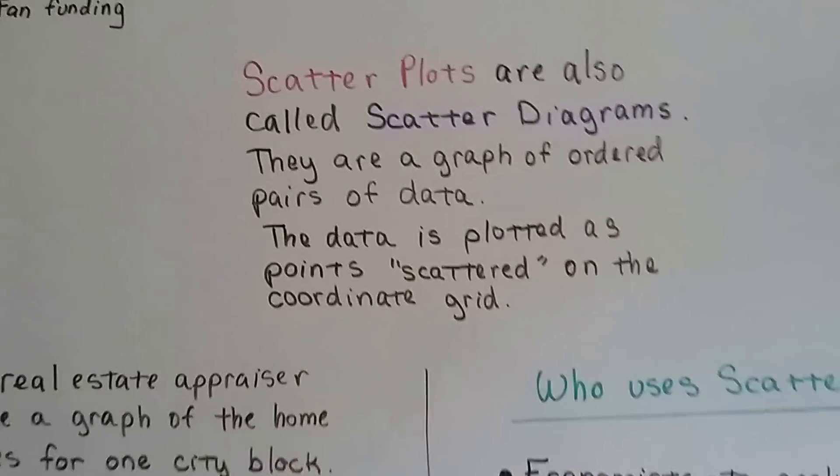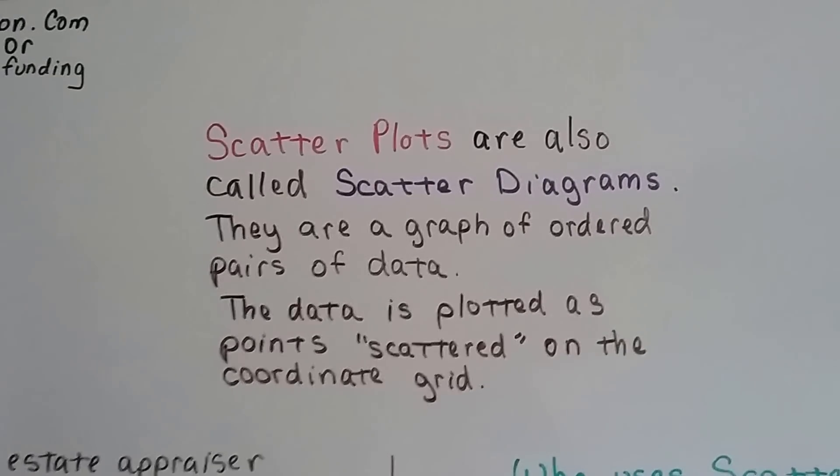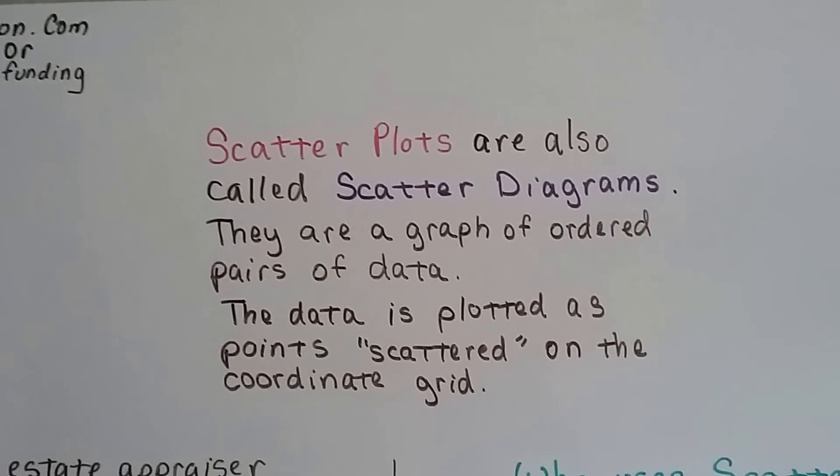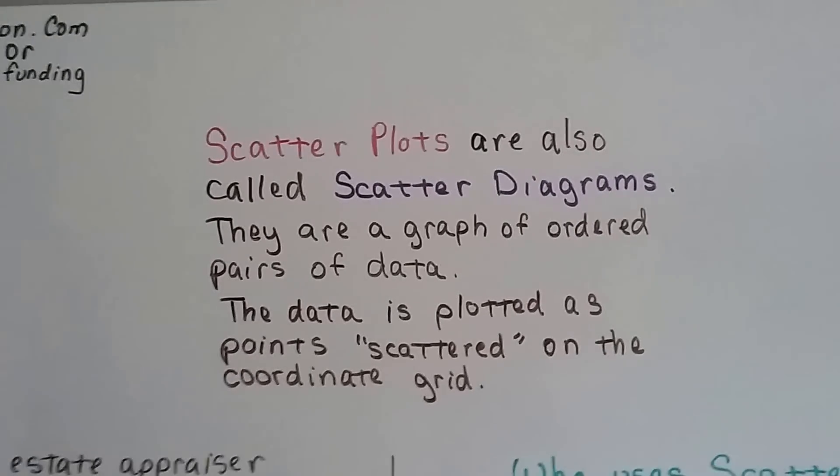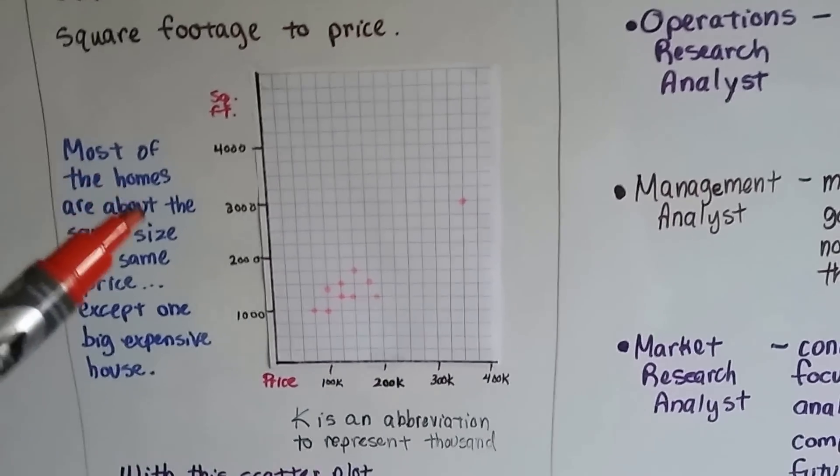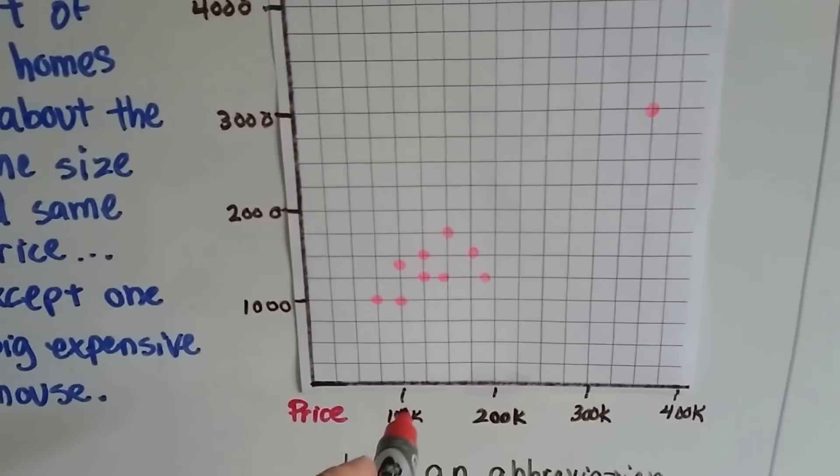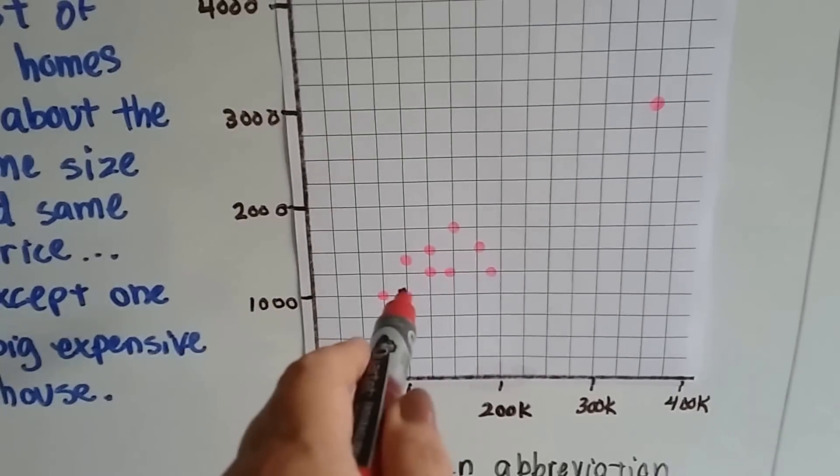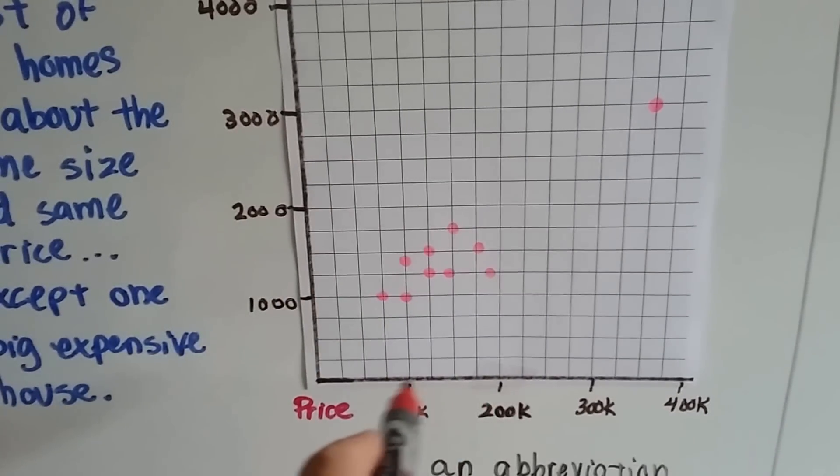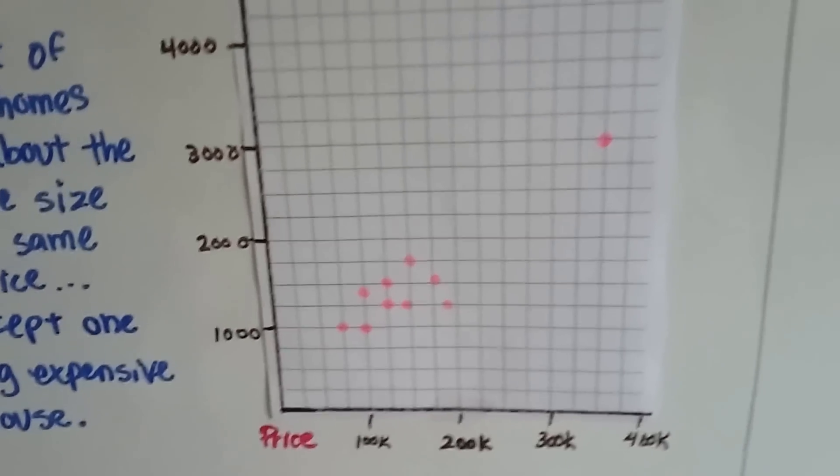So scatter plots are also called scatter diagrams. They're a graph of ordered pairs of data. The data is plotted as points and scattered around the coordinate grid. And this would be the x values, the price of the homes. So $100,000 and 1,000 square feet—the $100,000 would be the x value and the 1,000 square feet would be the y value.